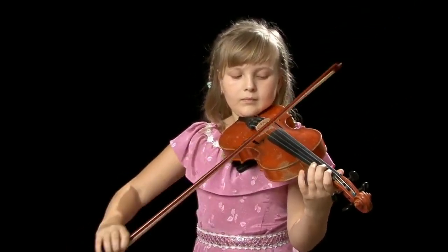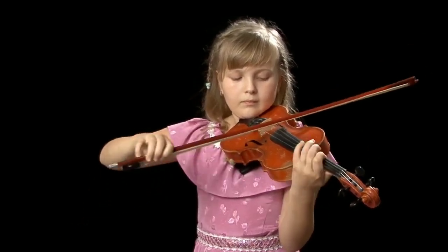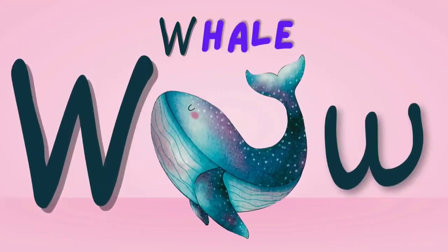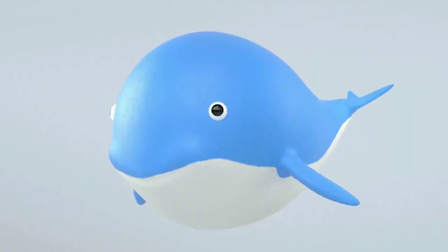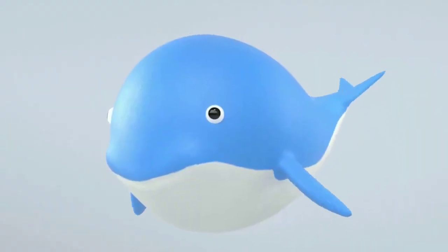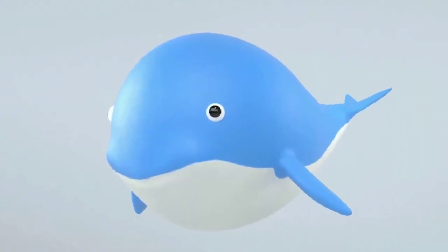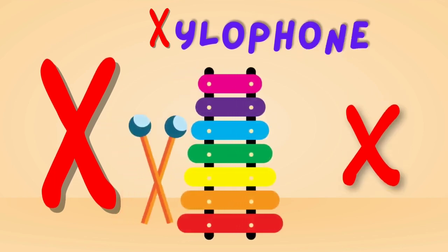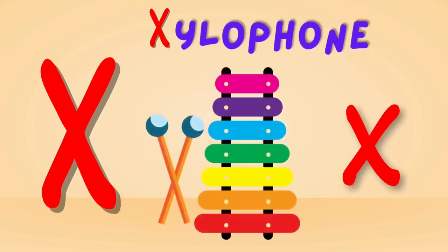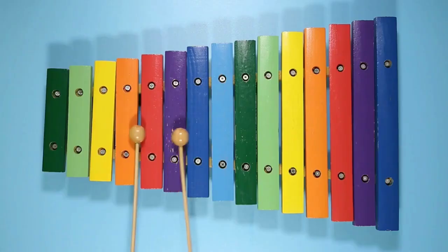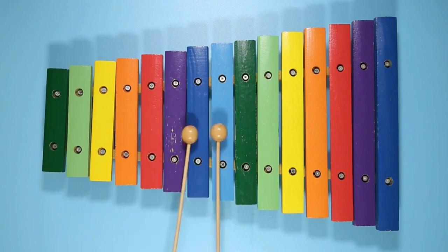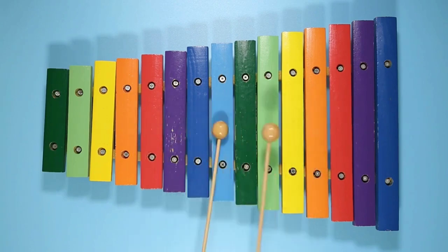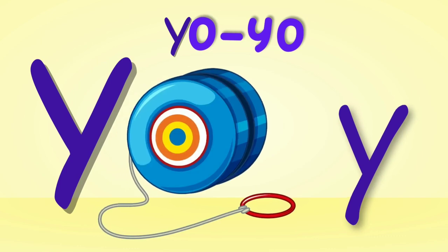W is for Whale. Whale, whale — this is a whale. X is for Xylophone. Xylophone, xylophone — this is an xylophone.